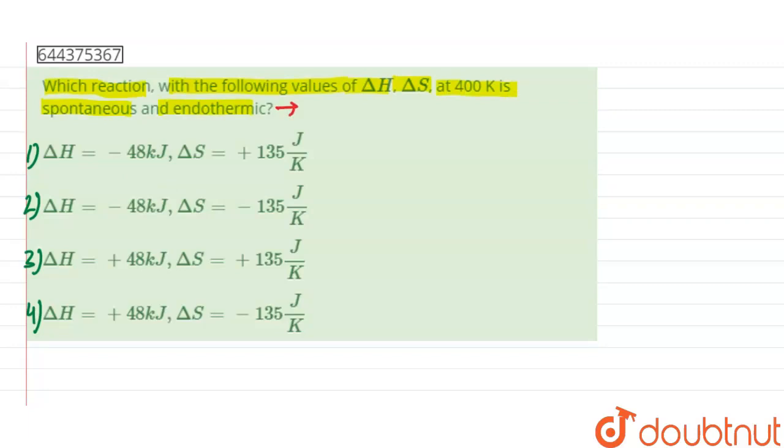Given that it's endothermic, we know that for endothermic reactions the delta H value will be positive. Now in option number one and option number two, delta H is given as negative, so these are canceled out.